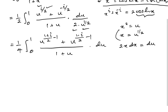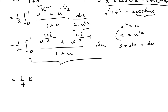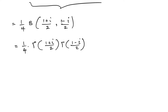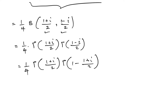This expression is familiar because it corresponds to the beta function. So we have 1 over 4 times Beta of (1 plus i)/2 comma (1 minus i)/2. We can represent the beta function using the gamma function, as we have done many times previously: 1 over 4 times gamma of (1 plus i)/2 times gamma of (1 minus i)/2, over gamma of (1 plus i)/2 plus (1 minus i)/2.